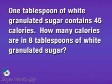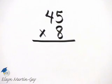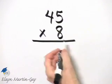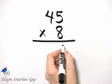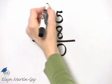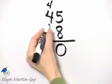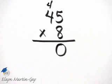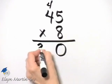So let's perform this multiplication. Eight times five is 40. Put down my zero, carry my four. Eight times four is 32, and 32 plus four is 36.